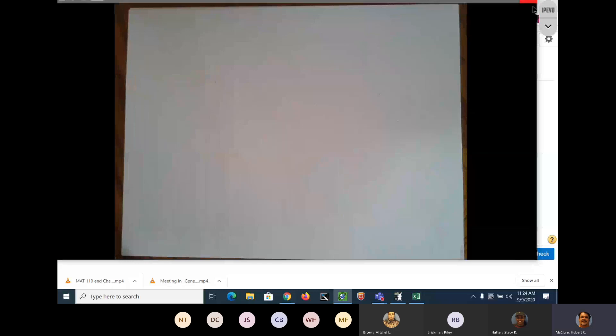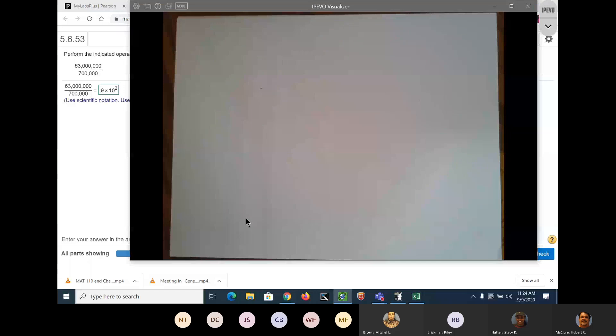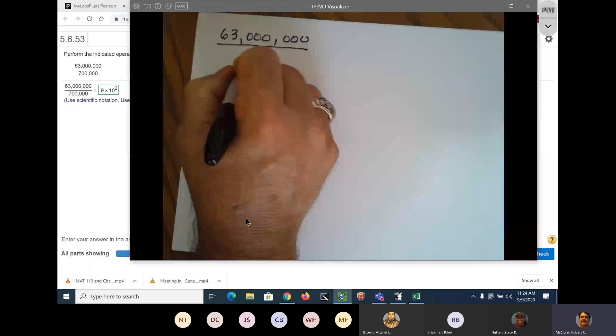The first thing we're going to do is rewrite the problem: 63 million divided by 700,000.